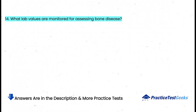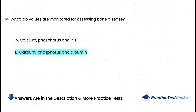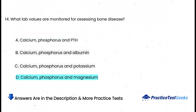What lab values are monitored for assessing bone disease? a. Calcium, phosphorus, and PTH, b. Calcium, phosphorus, and albumin, c. Calcium, phosphorus, and potassium, d. Calcium, phosphorus, and magnesium.